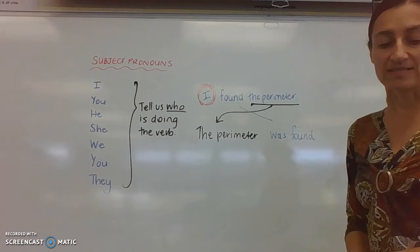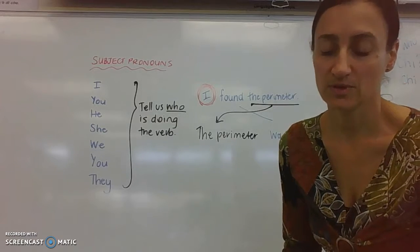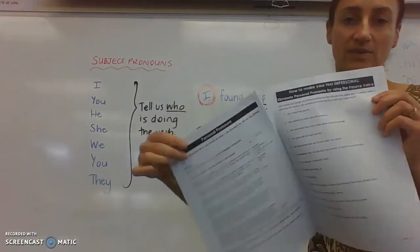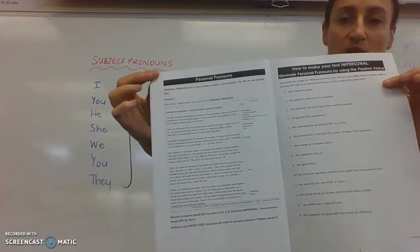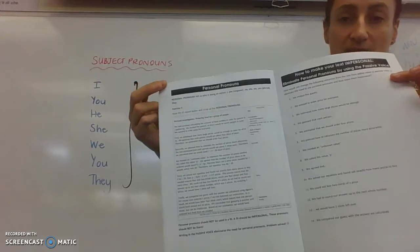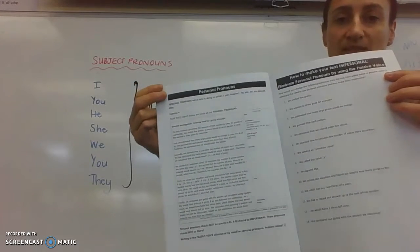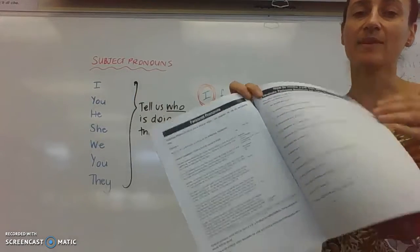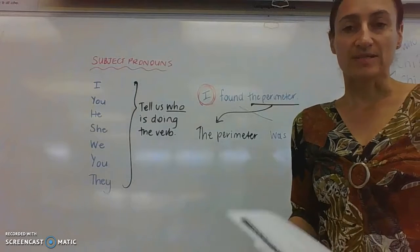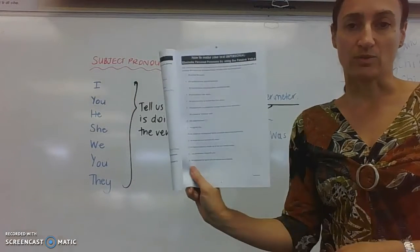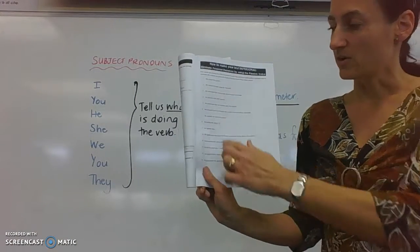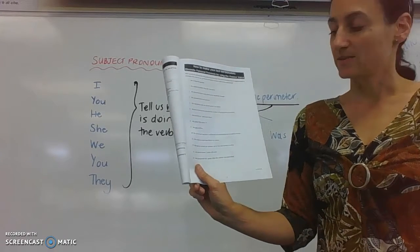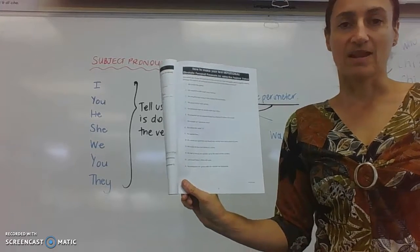Okay. So for this next task, what you'll need to do is refer to pages 8 and 9 in your How to Write a DI booklet, which focuses on asking you to identify, highlight, circle the subject pronouns in this particular text on this side, and then rewrite those sentences using the passive construction that we talked about in the last video on this side so that these sentences now become impersonal. So give it a go. That's pages 8 and 9 of your booklet.